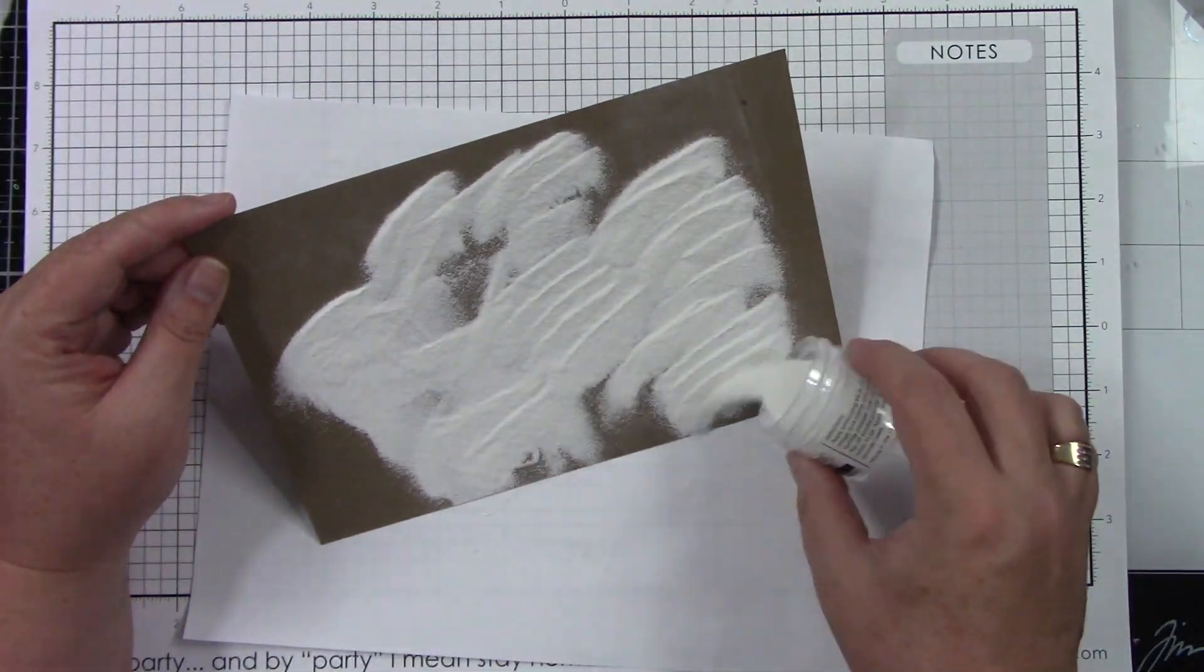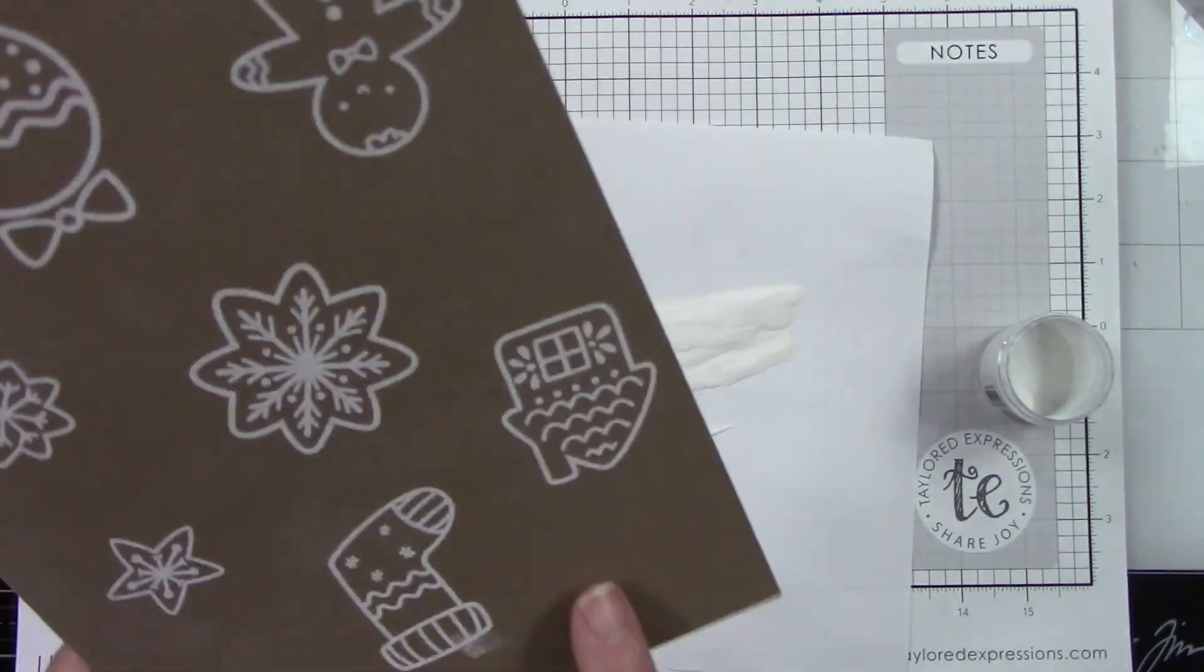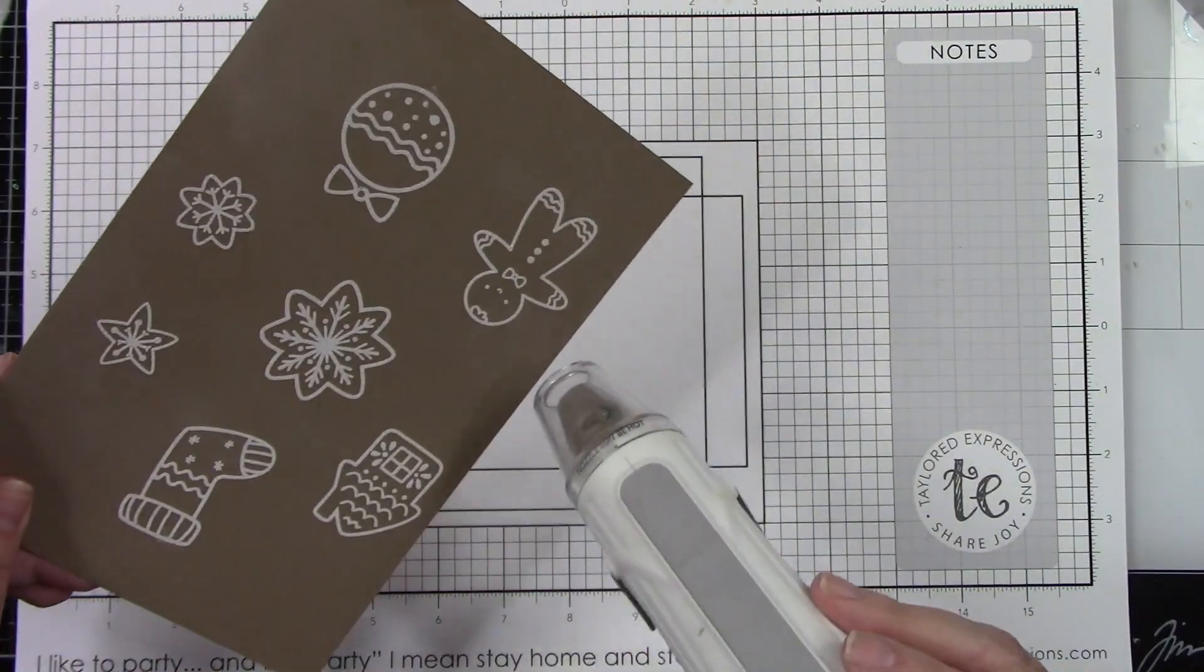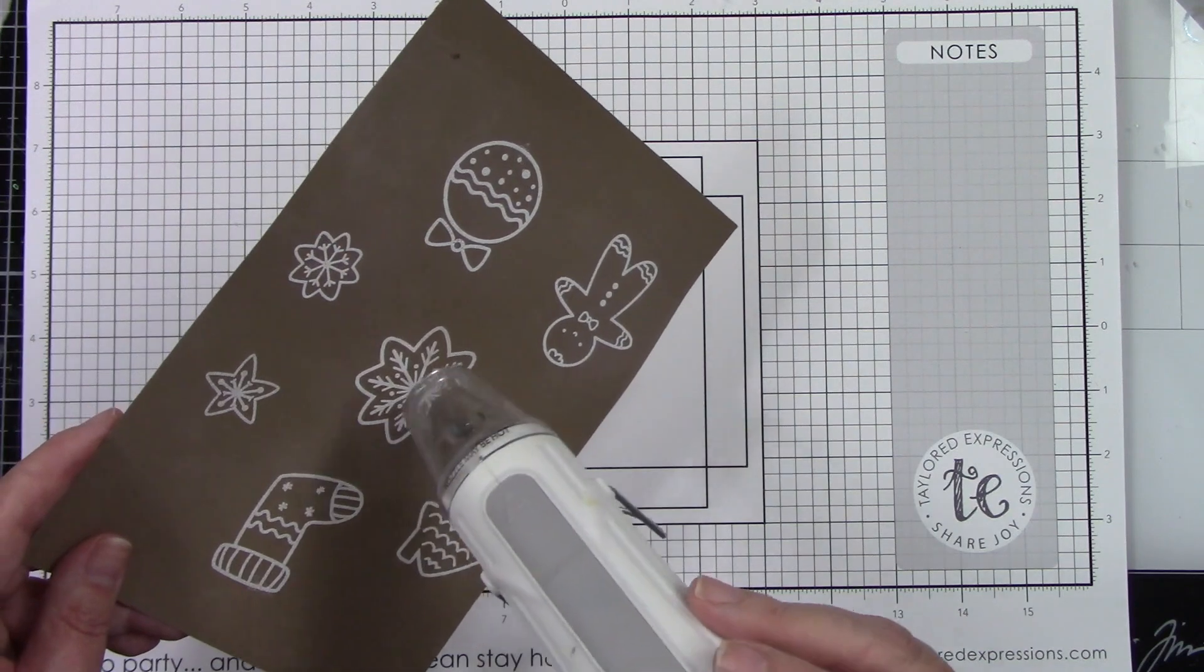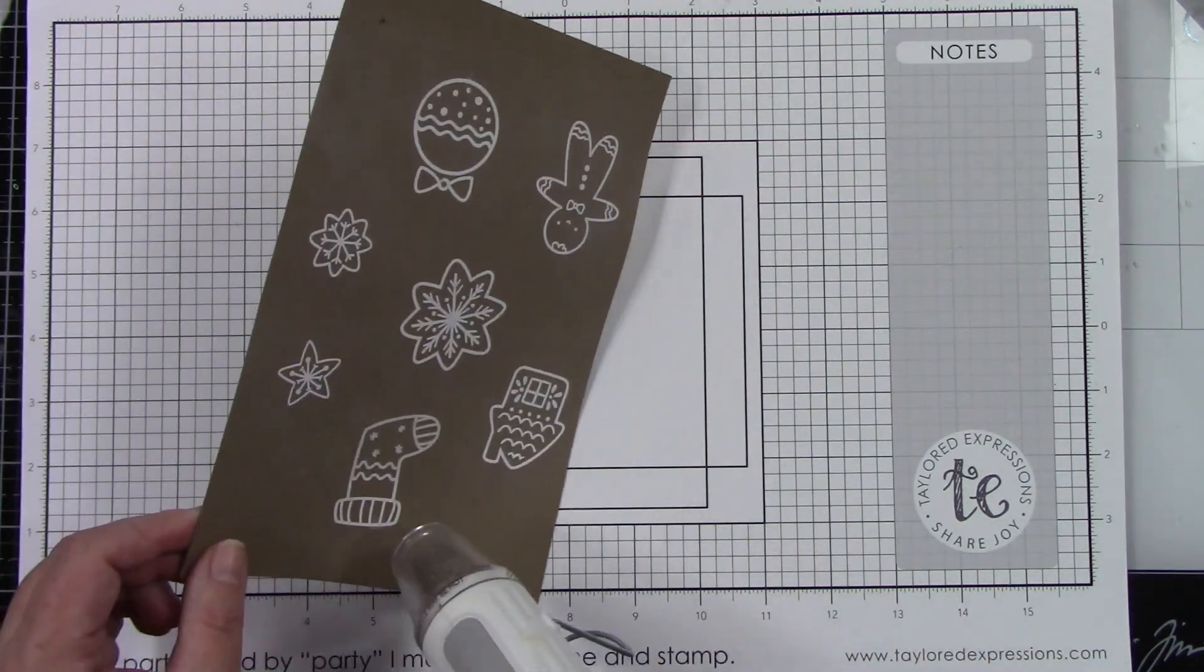This is going to give us our cute little cookie shapes and I just think they're so much fun. I'm going to heat that until it's nice and melted. We've got some snowflakes, a stocking, a house, a gingerbread man, and it looks like a cute little ornament.